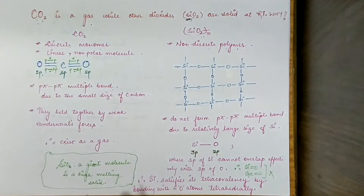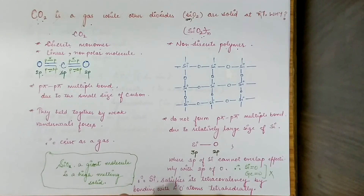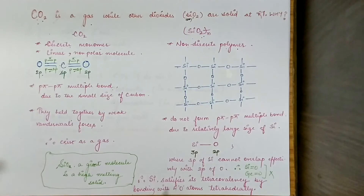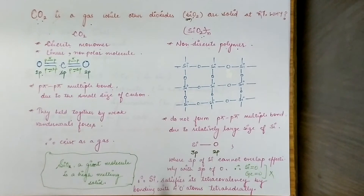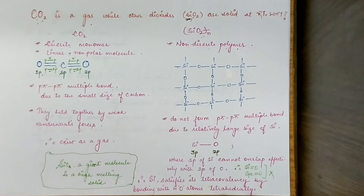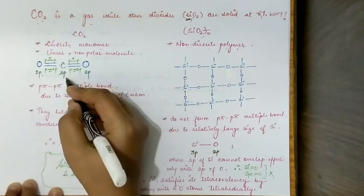Hybrid orbitals always show more effective overlapping. Please always remember: all orbitals which are more directional always show effective overlapping, and hybrid orbitals always show more effective overlapping compared to normal orbitals. For example, a p orbital is more directional than an s orbital, and an sp hybrid orbital is more directional still, showing the most effective overlapping.